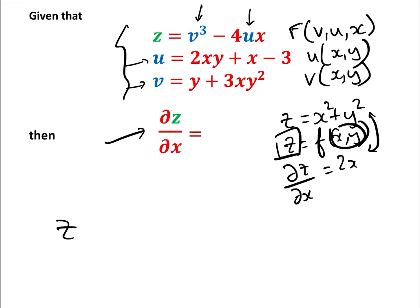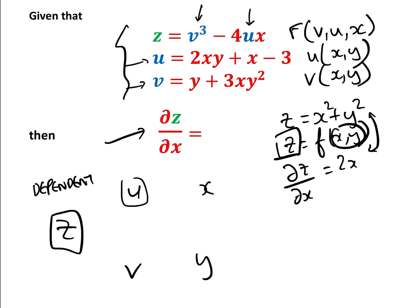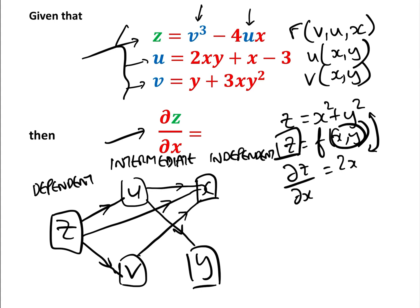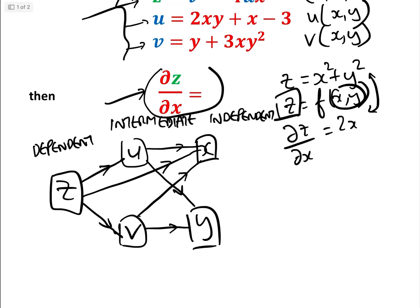Let's draw a nice little spider diagram. We have z at the top, then u and v, then x and y. Now z is called the dependent variable, u and v are called the intermediate variables, and x and y are called the independent variables. Because z is a function of u, v, and x, we draw arrows: z connects to u, to v, and directly to x. U connects to x and y, and v connects to x and y. What we need to find is the partial derivative of z with respect to x by going along every single path that connects z to x.